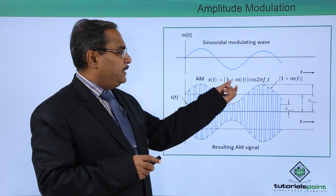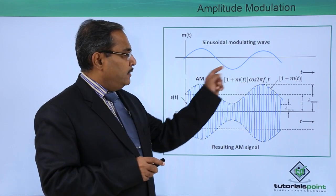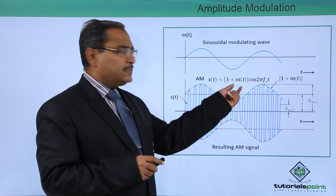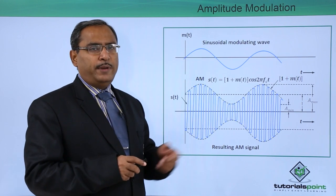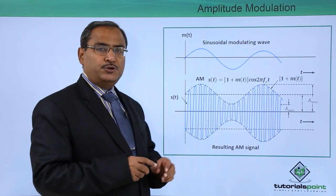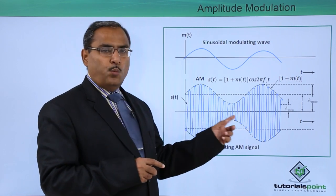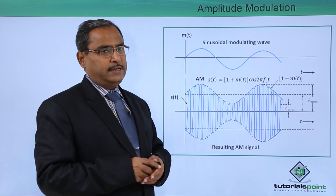But here you see, if it is minus 0.6 in that case here, now it will become 1 plus minus 0.6. So it will become 0.4. Then what will happen? This particular signal's amplitude will get reduced. So that is why this sort of waveform we are going to get as the analog signal.